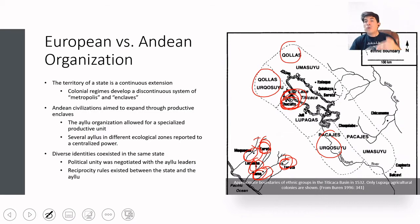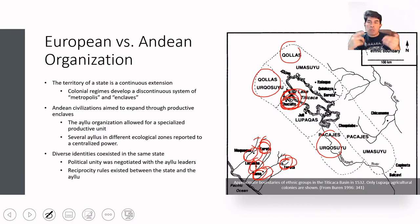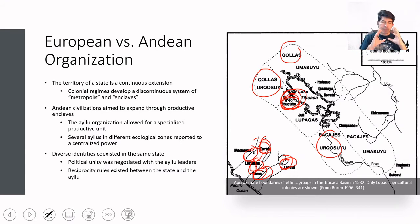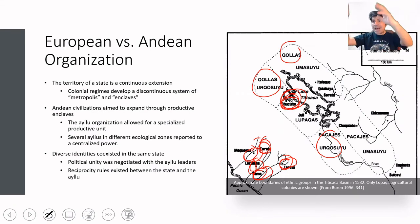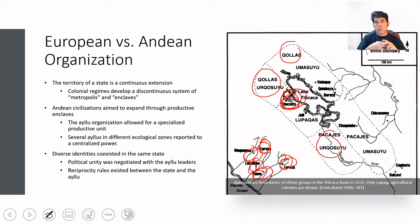The curaca of all these colonies and enclaves was also bound to reciprocate to the people working for him. It was a continuous interaction between working people in the community, the hierarchy within the ayllu, and then other ayllus and the central power that kept control of all these communities scattered across different altitude zones.